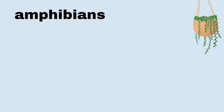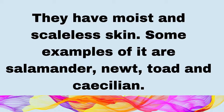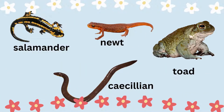Another group of vertebrates are amphibians. They are cold-blooded animals hatched from eggs, or oviparous. They spend part of their lives in water and part on land. They have moist and scaleless skin. Some examples are salamander, newt, toad, and cecilian.